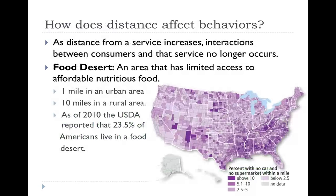Distance also affects customer behavior — the further you are from a service, the less likely you are to use it. A key example is the food desert: an area with limited access to affordable, nutritious food. Areas shown in dark purple on the map have more than 10% of residents without a car who lack access to a supermarket within a mile. In urban areas, a food desert is defined as lacking a grocery store within a mile; in rural areas, the threshold is 10 miles. As of 2010, the USDA reported that about 23.5% of Americans live in some sort of food desert.